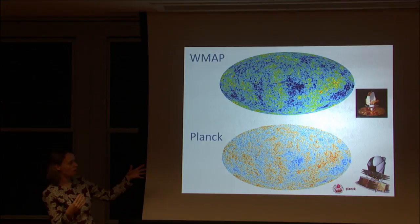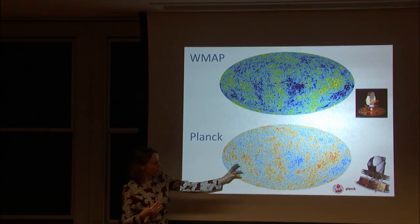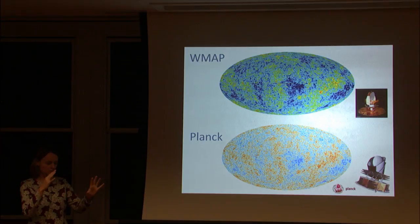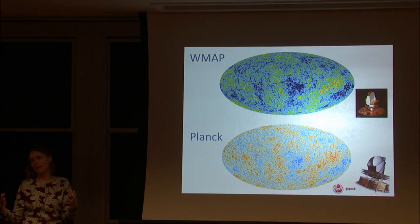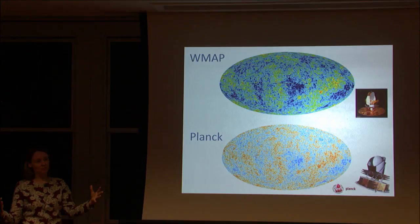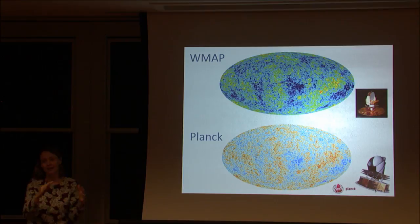This is a snapshot of part of the universe as it was at 400,000 years, when it transitioned from being ionized to neutral. We're capturing the temperature of the light at that time, seeing fluctuations of a part in a million around the mean — colder regions in blue, hotter in red. Those temperature anisotropies trace the density irregularities at 400,000 years, and those tiny features evolved to become the large-scale structures we find today.